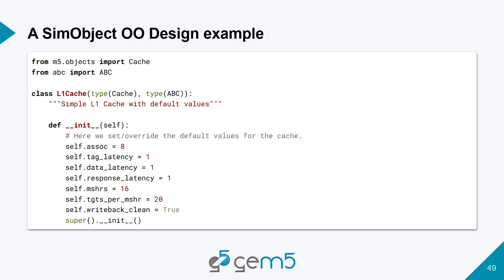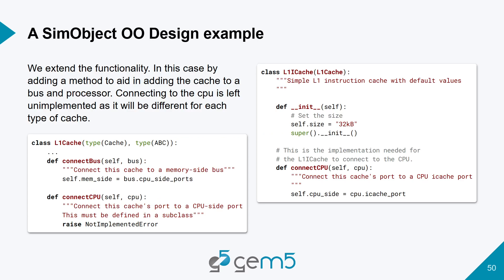There's a constructor, and in this example the constructor overrides the values of the base class — in this case cache. So you've got the associativity, tag latency, data latency, response latency, and the MSHRs. Any member of the base class can be overridden in the derived class. Here we've defined what it means to be an L1Cache. We can also extend the functionality — for instance, adding a method for how the cache connects the bus to the processor.